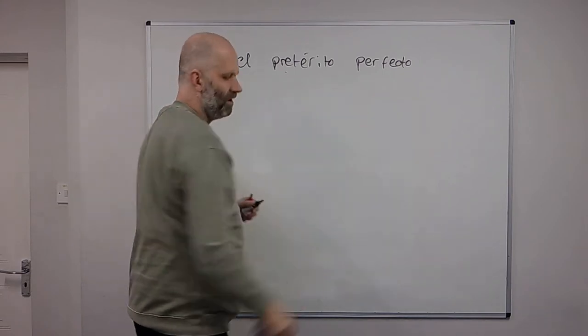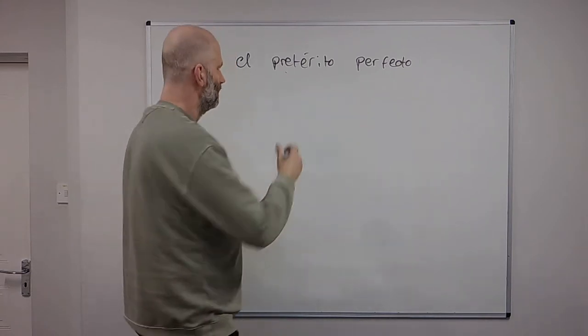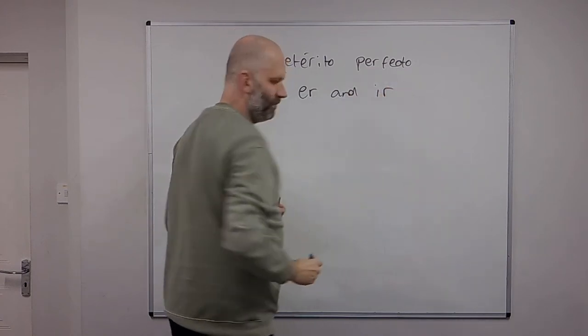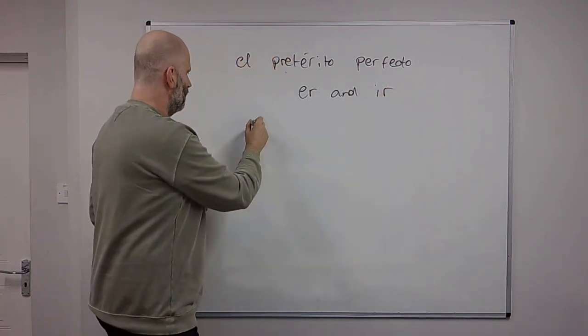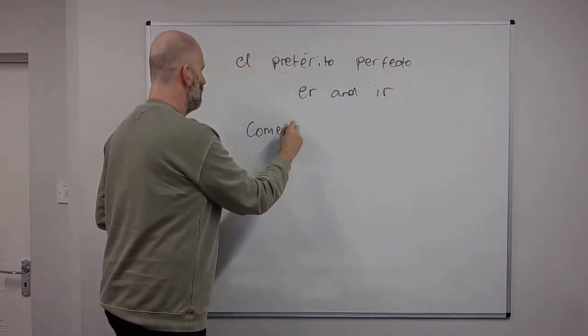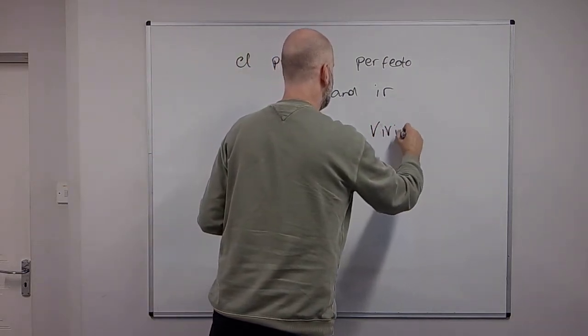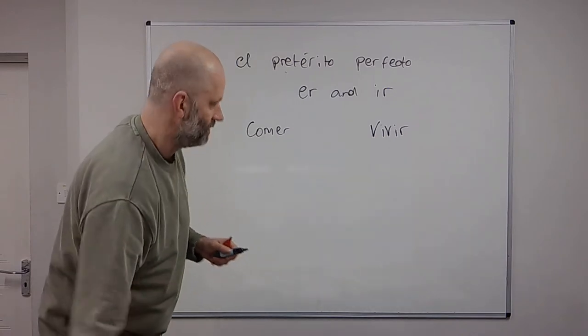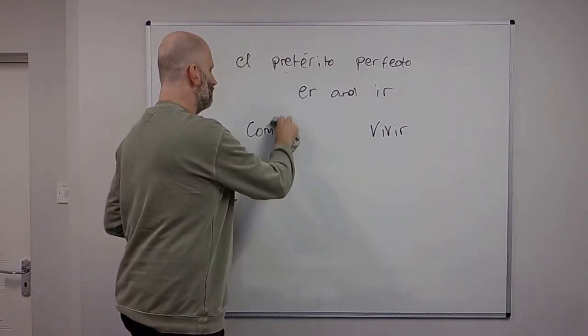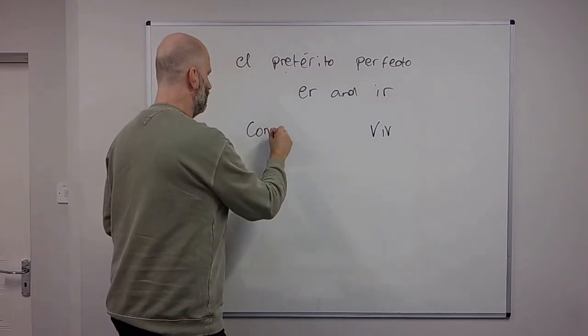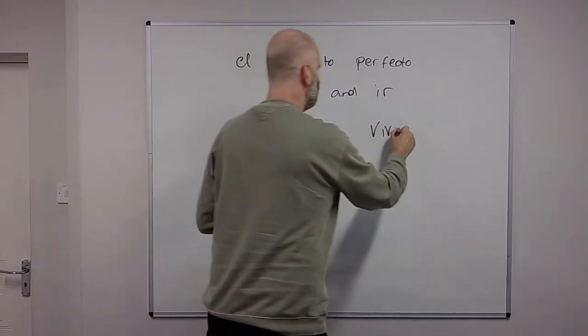And then if we look at regular ER and IR verbs, then we've got, if we've taken an ER verb, comer, or an IR verb, vivir, then to make the past participle you just replace the ending with -ido: comido, vivido.